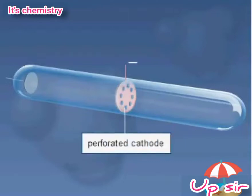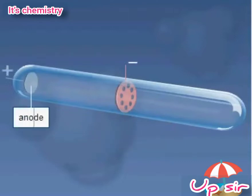The perforated cathode was placed in the middle, and a plain anode at one end of the tube. The tube was filled with hydrogen gas at very low pressure.